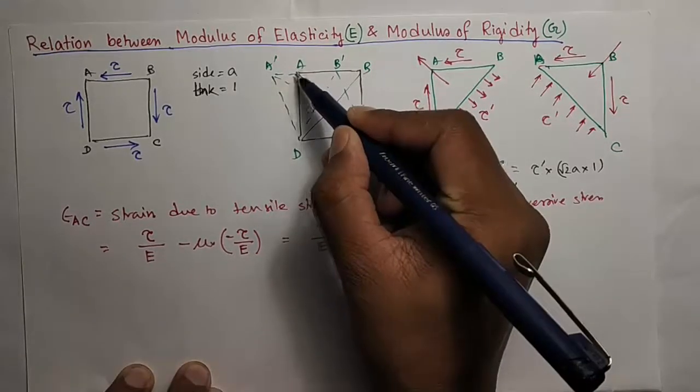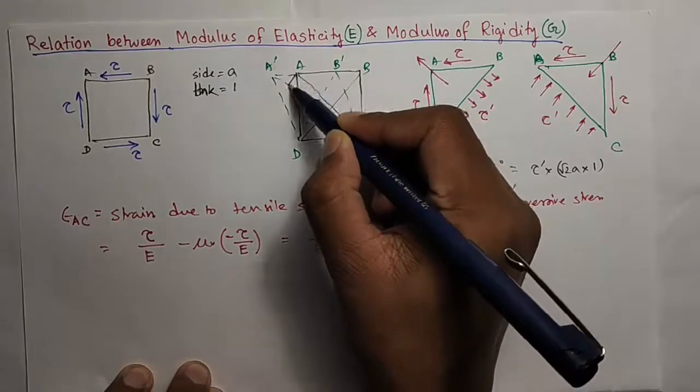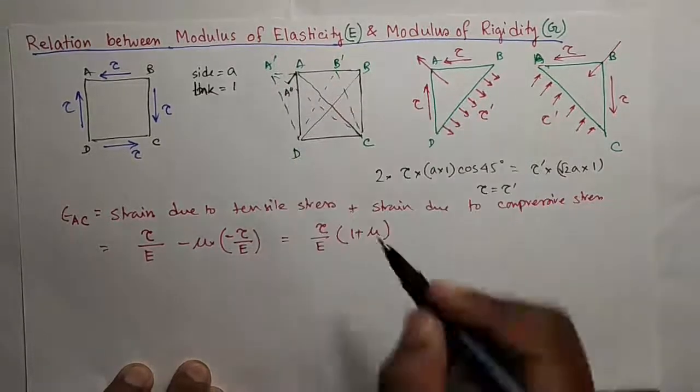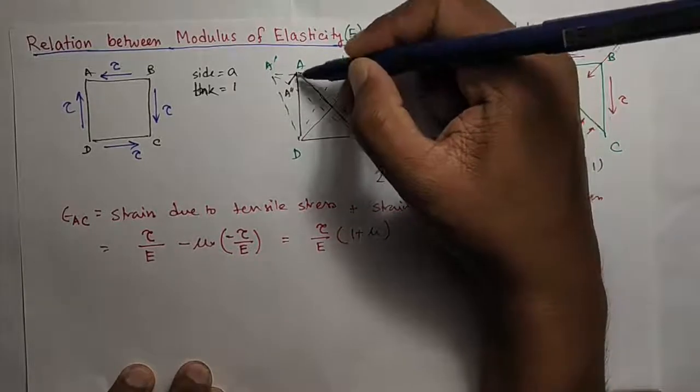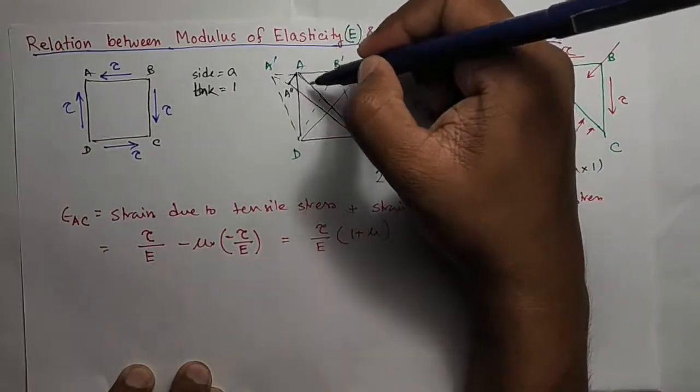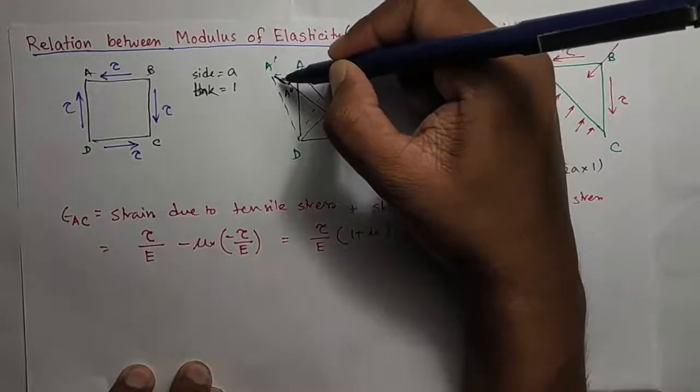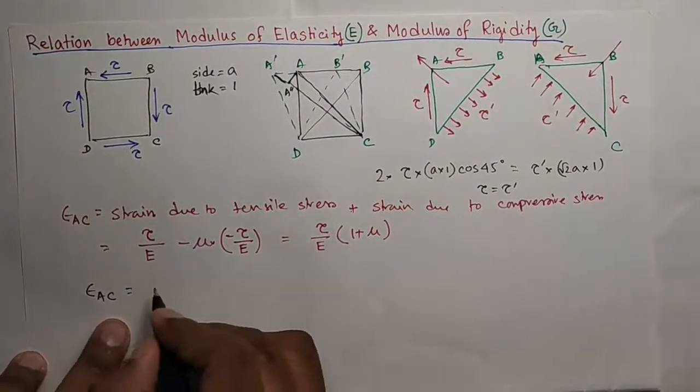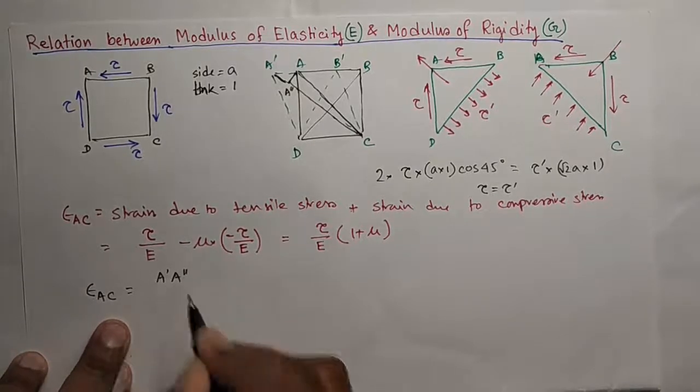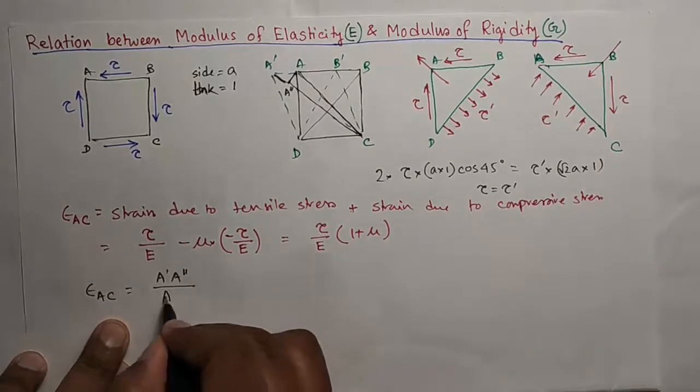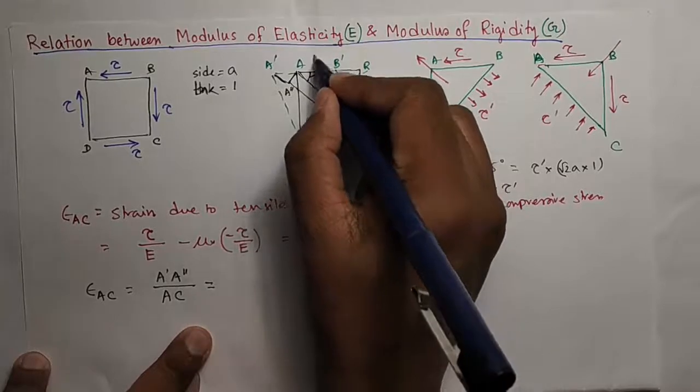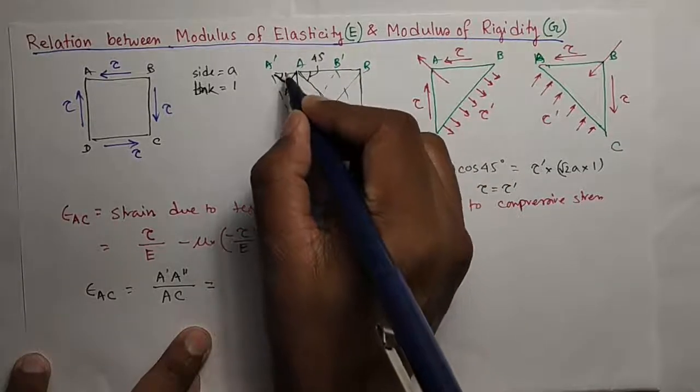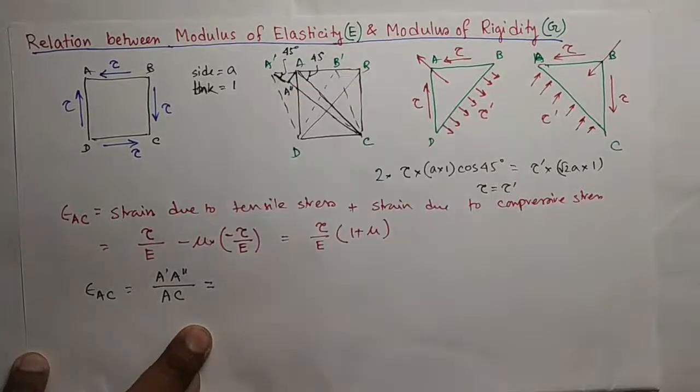Now let us try to find out the strain in AC from this diagram. Let us draw a perpendicular say it is A double dash and you see this AC and A double dash C are equal and the change in AC is nothing but this A dash A double dash. Strain AC is equal to A dash A double dash by the original length of AC. Now you see this is 45 degree and there is a very small change in length so this angle will be also approximately equal to 45 degree.